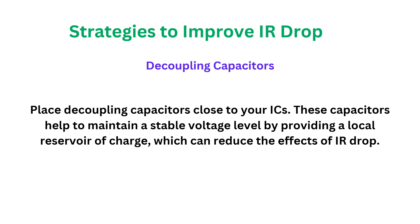Another strategy is to use decoupling capacitors. Place decoupling capacitors close to your IC. These capacitors help maintain stable voltage levels by providing a local reservoir of charge, which reduces the effect of IR drop. You should place decoupling capacitors in empty regions of your layout. Decoupling capacitors help in two ways: first, they improve IR drop, and second, they help maintain density — instead of the tool filling empty space with dummy fill, the decoupling capacitors serve a functional purpose while also addressing density-related issues.